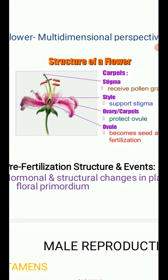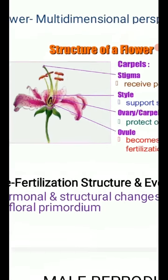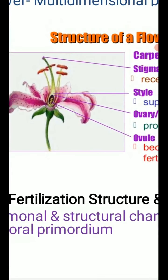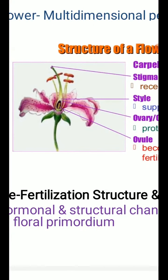What are the whorls seen in this flower? We can see four whorls of the flower. The outermost green-colored whorl is called the calyx, and the colorful second layer is called the corolla. The third whorl is called the androecium, and the fourth whorl is called the gynoecium. So these are the four whorls of the flower.